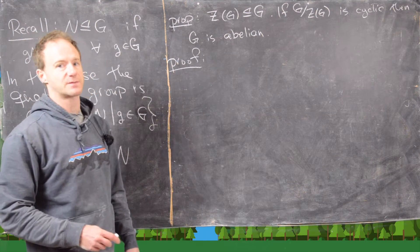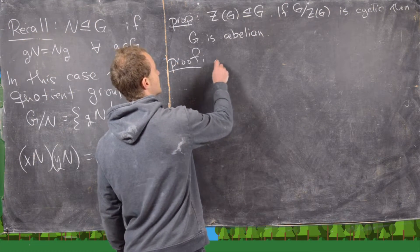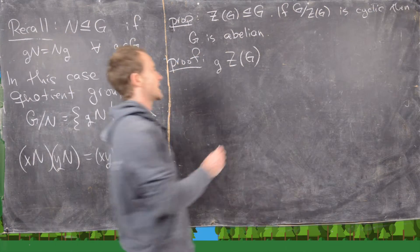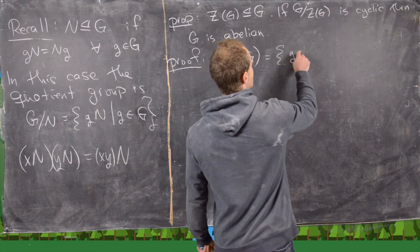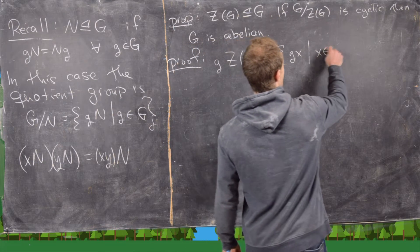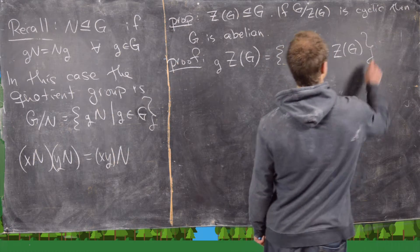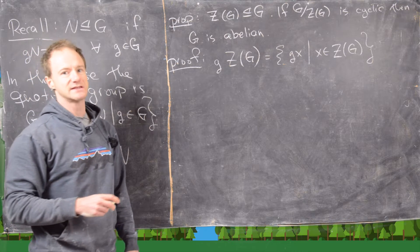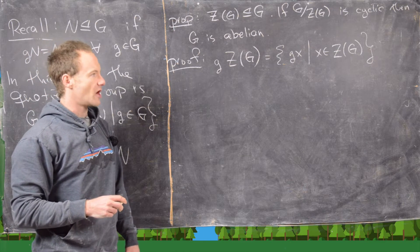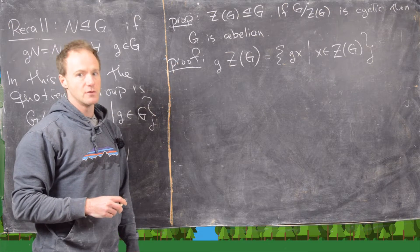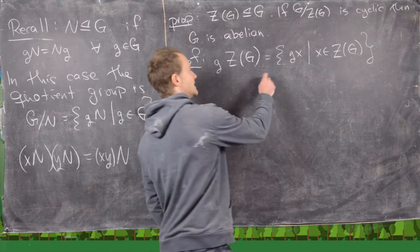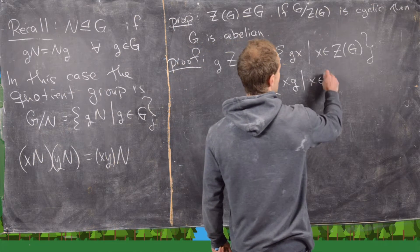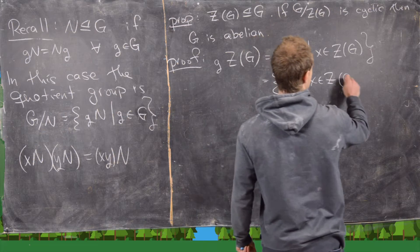So let's start off with the first part. Let's notice that if we look at the coset GZ(G), that's going to be equal to everything G times X, where X runs from all elements from Z(G). But let's recall what the center means. The center is all the elements from the group that commute with every element from the group. So that means this GX is really the same thing as XG for all X in Z(G).